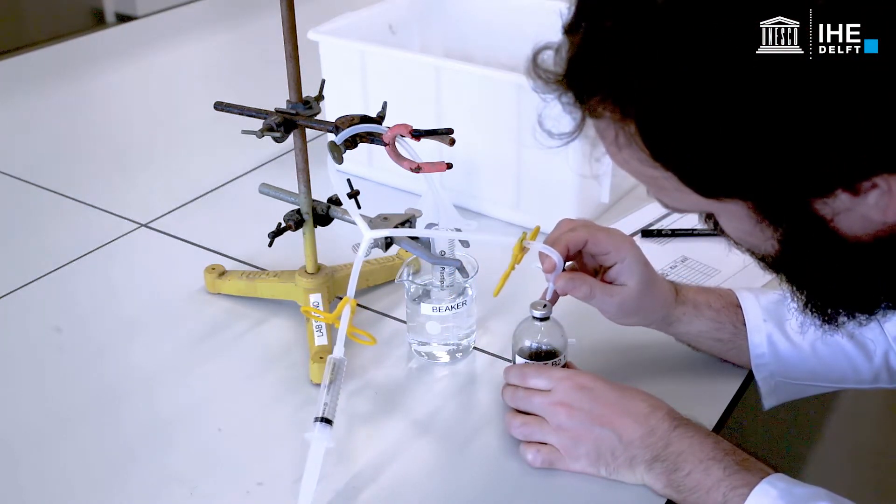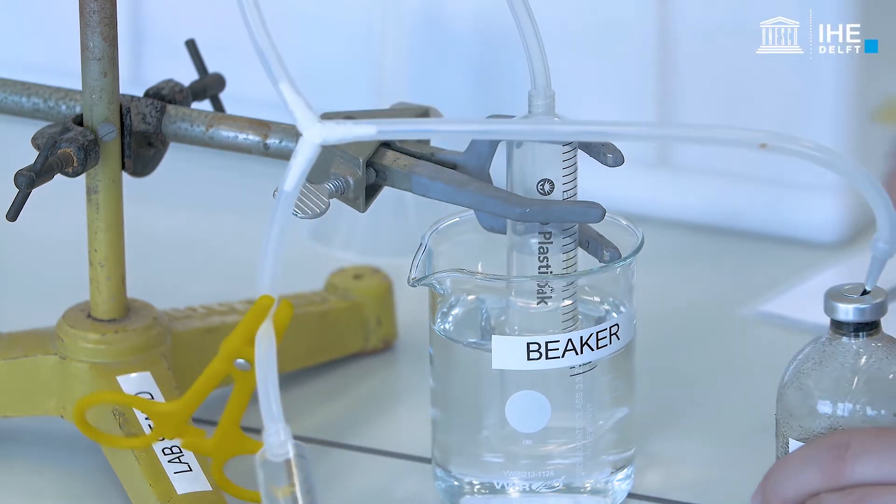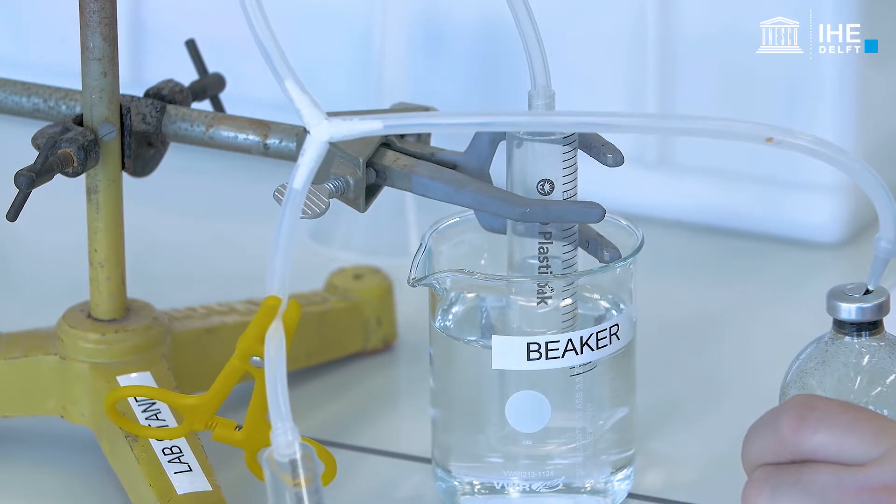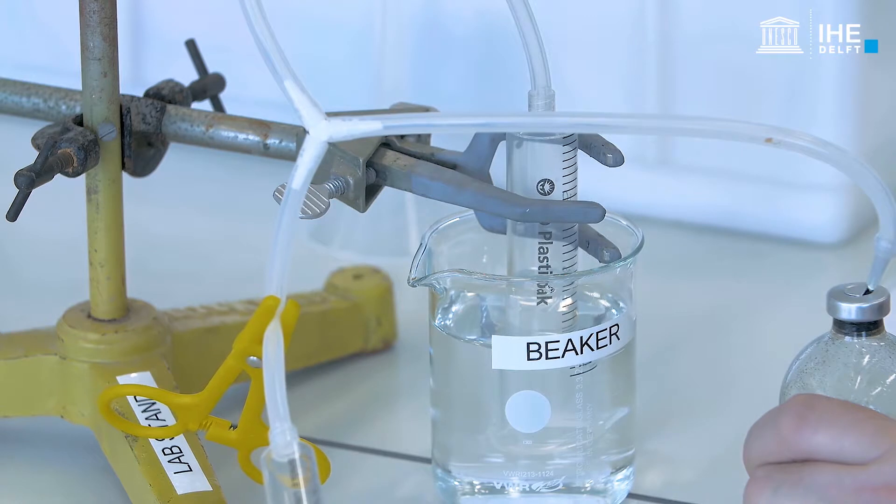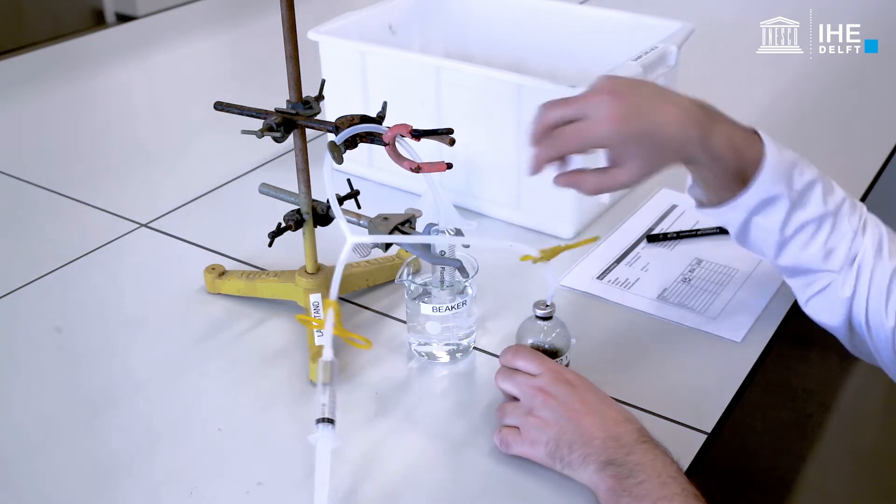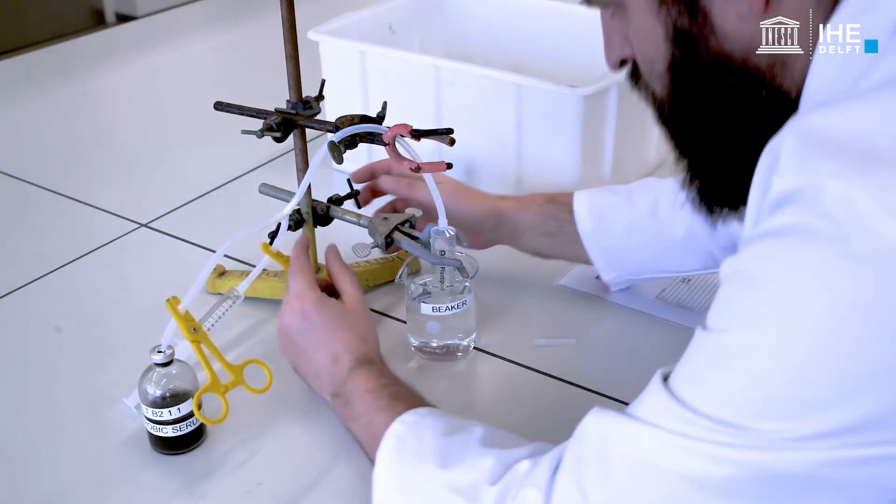Thus, a graduated syringe or burette is submerged in a beaker with water, connected with the tip to a tube with a needle. The initial headspace volume in the syringe is registered as volume zero. Then the rubber stopper of the serum bottle is pierced with the needle and subsequently the headspace volume of the syringe will expand.